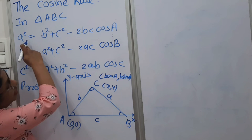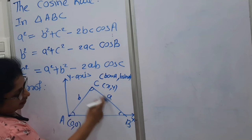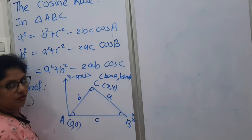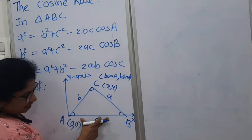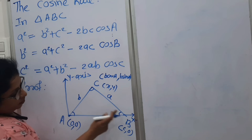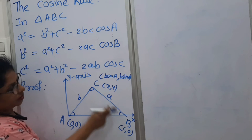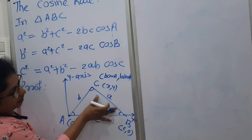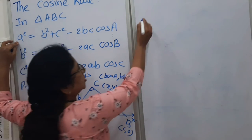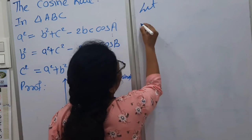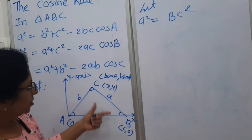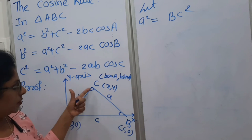Now we want the distance A, which is the distance BC. So we need the coordinates of B as well. This distance is C, so the coordinates of B are (C, 0). Now we know the coordinates of B and the coordinates of C, so we can easily find the distance BC. Our first statement is A squared equals BC squared, so let A squared equal BC squared. Using the distance formula, find the distance between B and C.